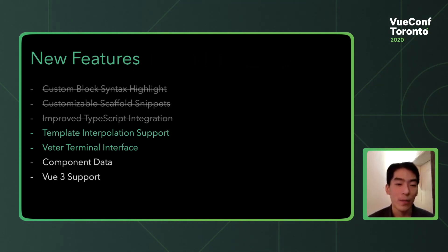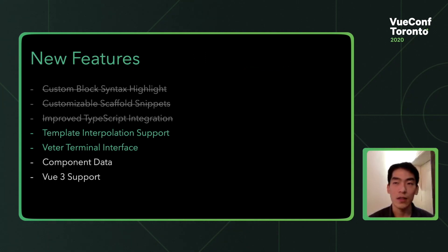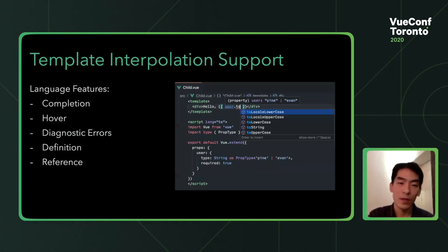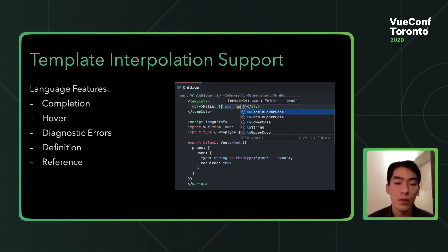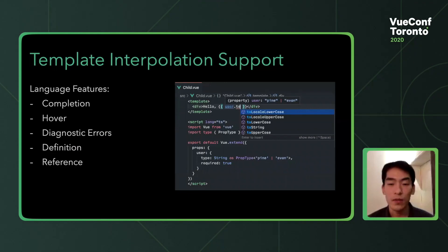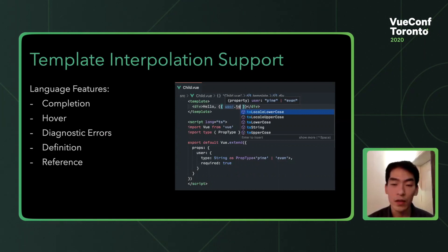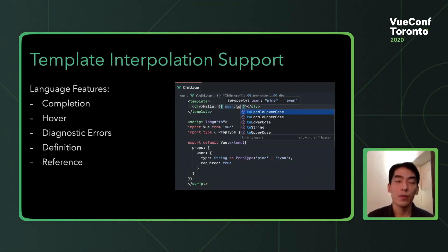I'd like to talk about template interpolation support and Vetur terminal interface, which I think are two of the most awesome new features. Template interpolation support gives you JavaScript and TypeScript support for the JavaScript you write in templates. So far we have completion, hover, diagnostic errors, definition, and references. For example, hover shows type information and completion shows all the properties in user — and username shows an error because user.tube is not a property of user.